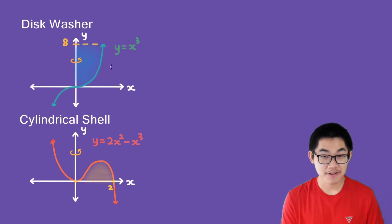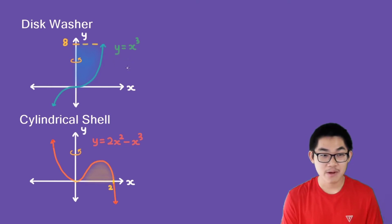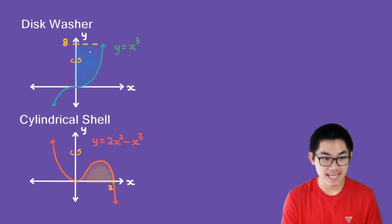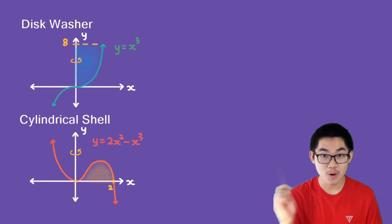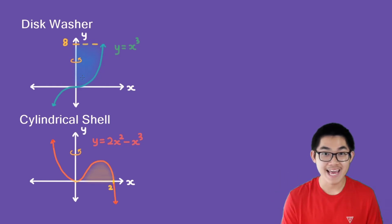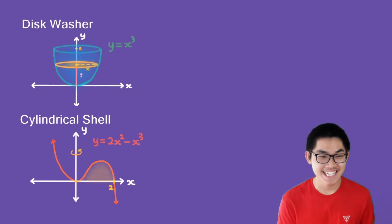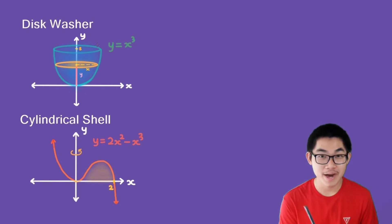Here we have a function y = x³, and we want to take the area between the y-axis and this function. We take that area and rotate it around the y-axis. As you can see, this gives us a three-dimensional object that we want to find the volume of.